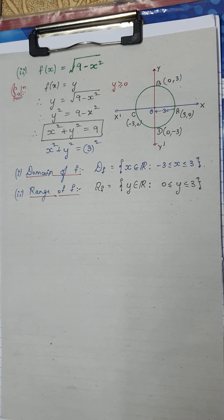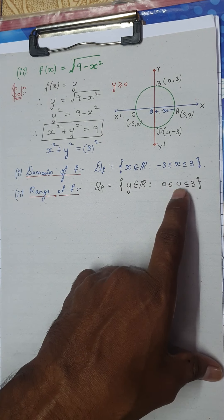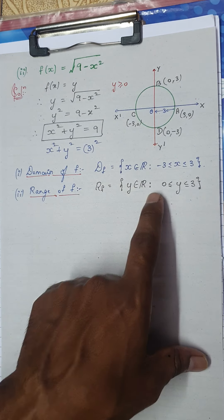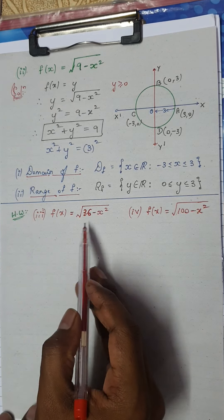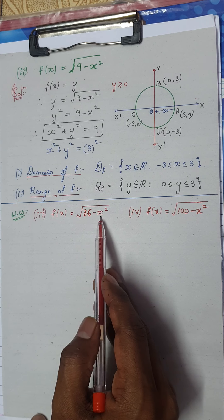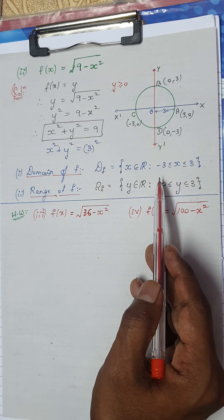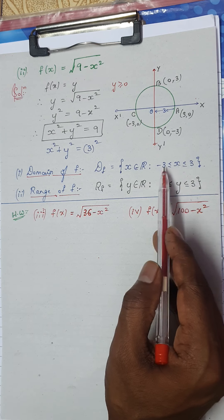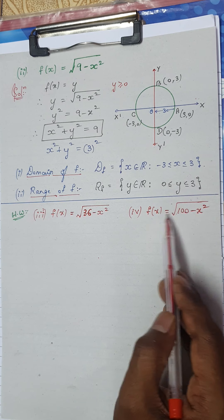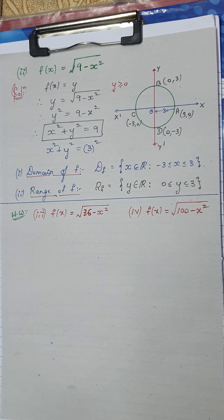I hope this is very simple and understandable. Your teacher may have taught you another way, but you will land at the same final answer. As homework, try these two functions: f(x) = √(36 - x²) and f(x) = √(100 - x²). The process is exactly similar - for √(36 - x²), since 36 = 6², the domain changes from [-3,3] to [-6,6]. Similarly for √(100 - x²), it becomes [-10,10] since 100 = 10².